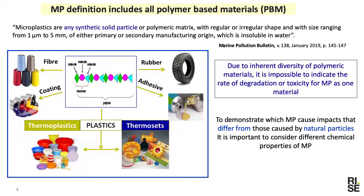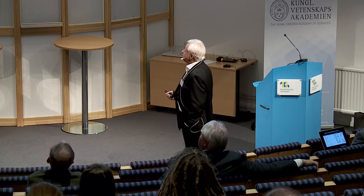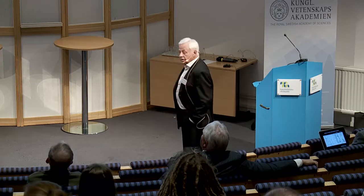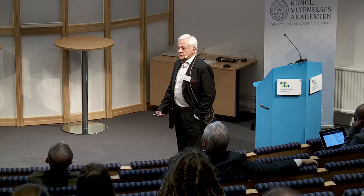The first difficulty is the definition of microplastics. We are talking about polymer-based materials, and if you look at this picture you can see that polymers can be used to make different kinds of materials — we have fibers, rubbers, coatings, adhesives. But the most used definition is that microplastics are any synthetic solid particle based on polymers which is insoluble in water.